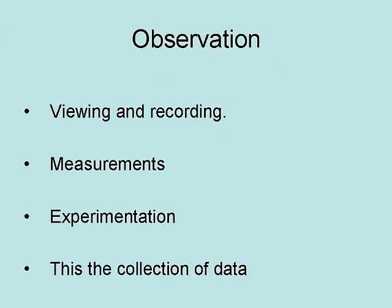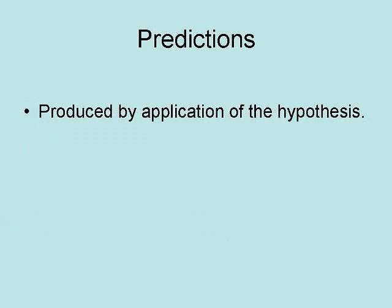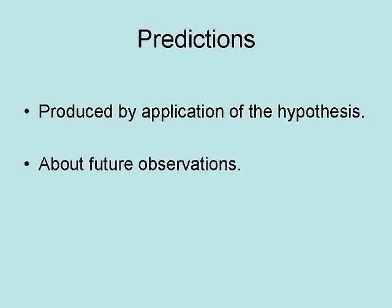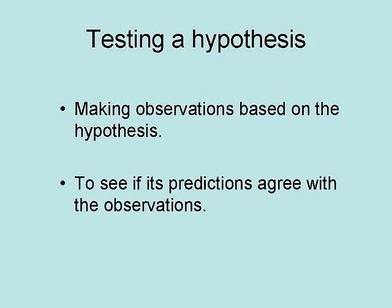Observation involves viewing and recording, making measurements, and conducting experiments. This is the collection of data. A hypothesis is a tentative explanation of an observed phenomenon used to make testable predictions. Predictions are produced by applications of the hypothesis about future observations. They must also be unique, since a prediction from two or more hypotheses can't distinguish between the alternatives. Testing a hypothesis involves making observations based on that hypothesis to see if its predictions agree with the observations.